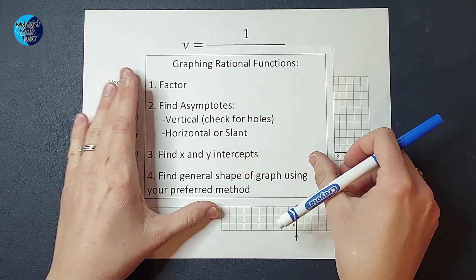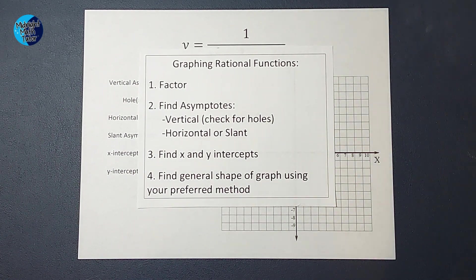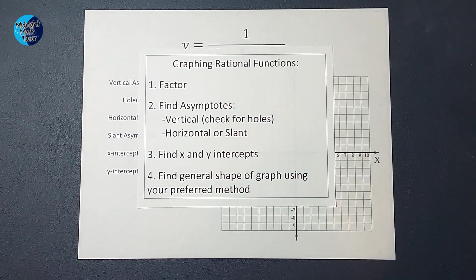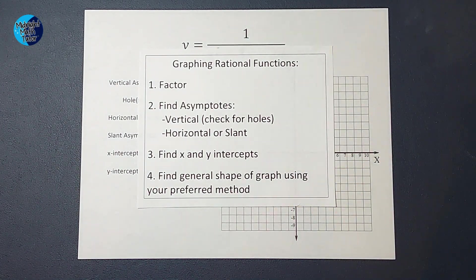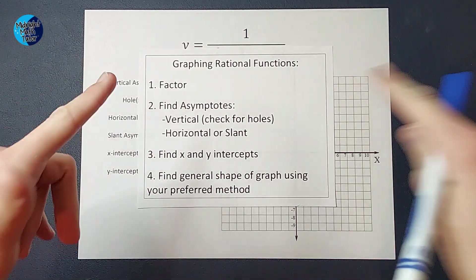So the first thing we're going to do is factor. Then we're going to find our asymptotes, vertical and horizontal or slant, and we're also going to check for holes. Then we're going to figure out our x and y intercepts. And then we're just going to figure out the general shape of our graph using our preferred method. We'll talk about that once we get there.